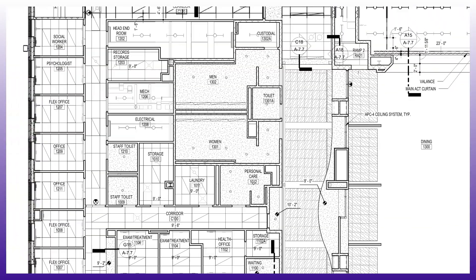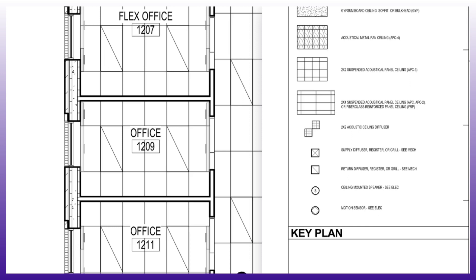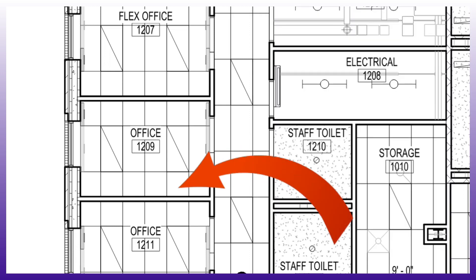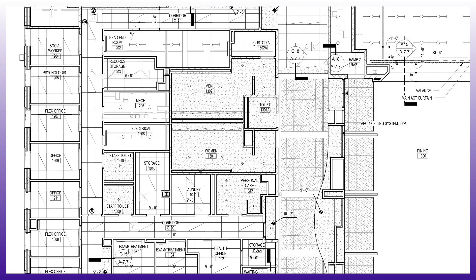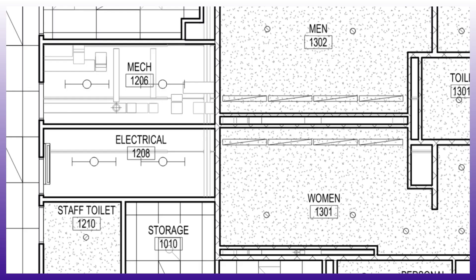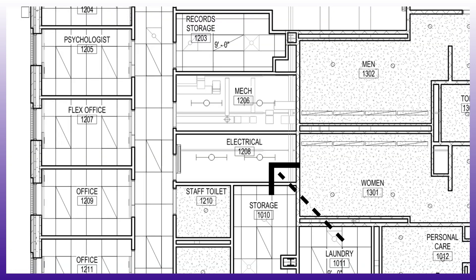There are a few different ceiling types laid out right here. We have listed in these offices the 2x4 ceiling tiles — these are just halves of them, cut in half — and then you have the lights indicated with the diagonal line. Then you have the gypsum board ceilings in the restrooms. And the electrical room and the mechanical room are exposed, meaning there is no ceiling — you look up and see the bottom of the structural deck.